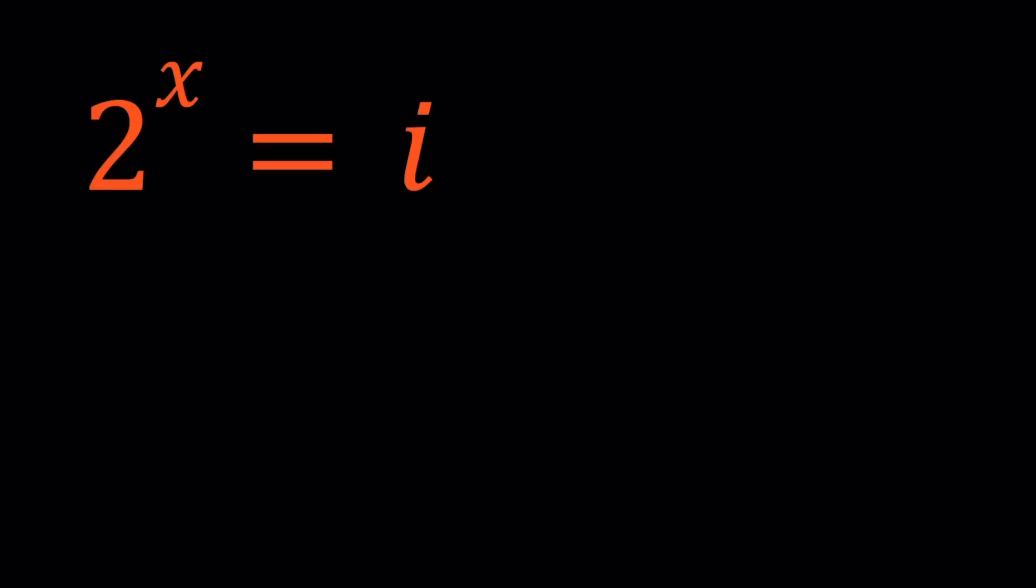This looks simple, right? Sort of. Let's go ahead and ln both sides. ln being the natural logarithm. So if you ln both sides, you're going to get ln 2 to the power x equals ln i. The million dollar question is, what is ln i?